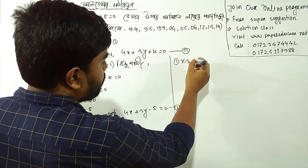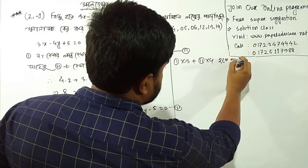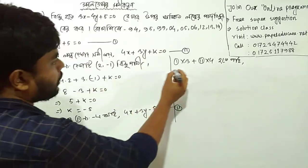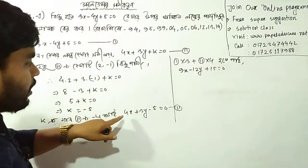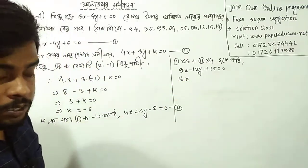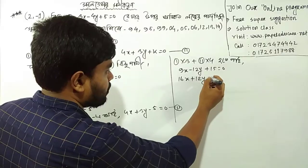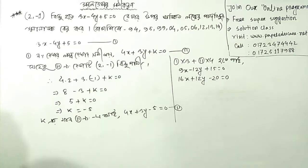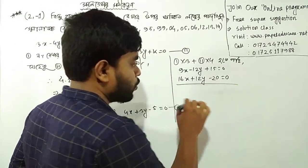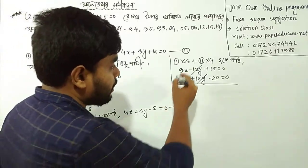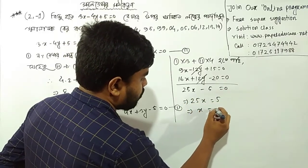9 into 3 plus 2 into 4. 2x minus 5 is equal to 0. So, 25x is equal to 5. So, x is equal to 5 by 25.